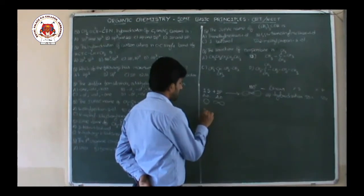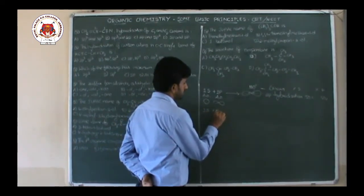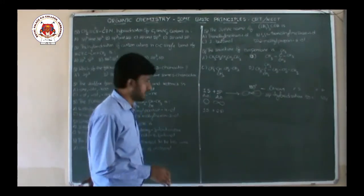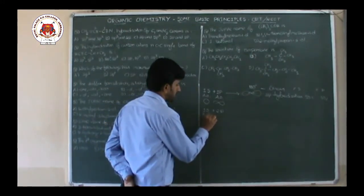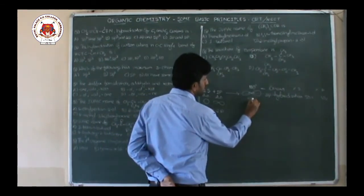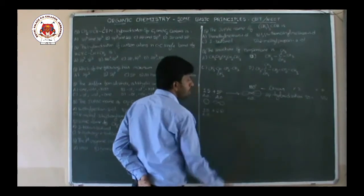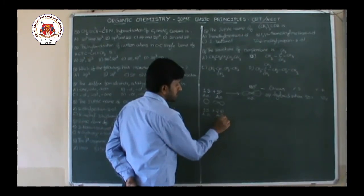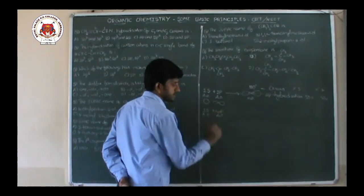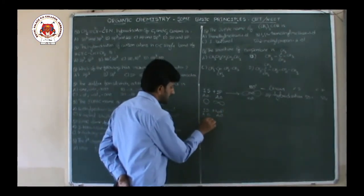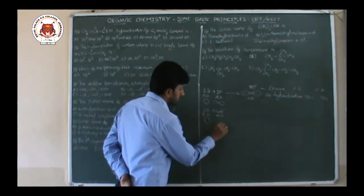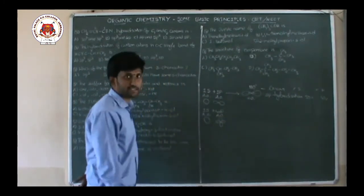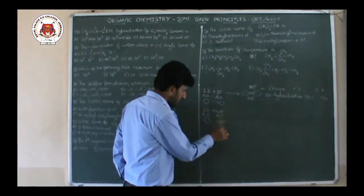Similarly, one S atomic orbital can mix with two P orbitals — that is, PX and PY. Assume PXPY. So 1 S atomic orbital mixes with 2 P orbitals — PXPY. I am drawing S as spherical, one P orbital with double lobe shape, and one more P orbital in another direction — X and Y, assume PXPY.